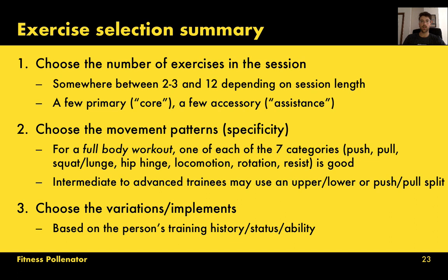In summary, exercise selection boils down to three steps: choose the number of exercises — anywhere from two to twelve depending on session length — with an appropriate mix of primary and accessory exercises; choose movement patterns based on specificity, using one from each of the seven categories for a full-body workout; and choose the variations and loading implements based on the person's ability, status, and training history. For intermediate or advanced trainees who want a split, I'd recommend upper/lower or push/pull.